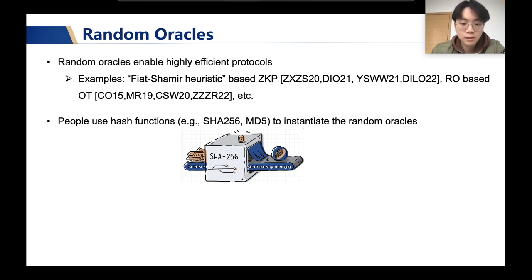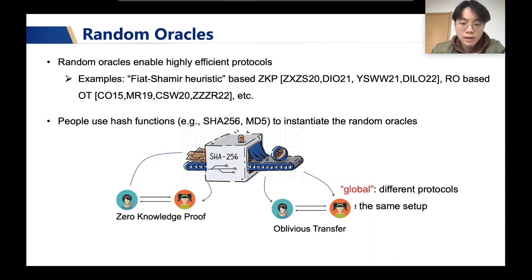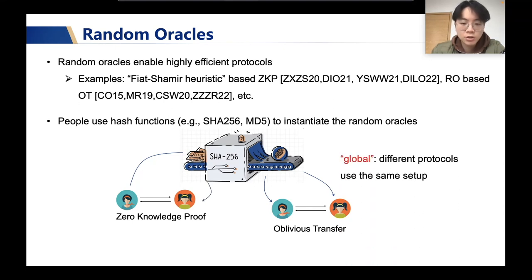Hash functions such as SHA-256 are predefined and can be obtained by people all over the world. That means there might be a group of people using SHA-256 to execute a zero-knowledge proof, and at the same time there might be another group of people using the same hash function to execute an OT protocol. That means in real-life applications, the random oracle can be seen as a global setup, which is available for different protocol instances.